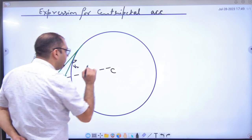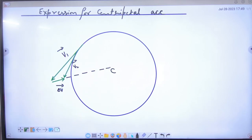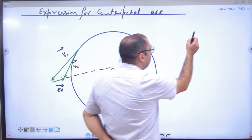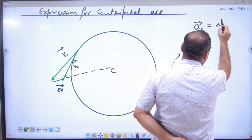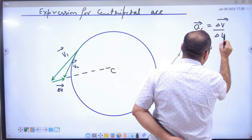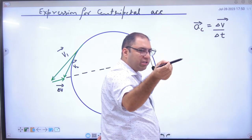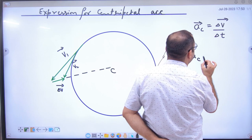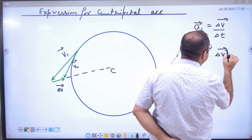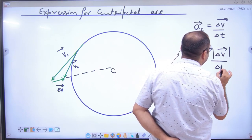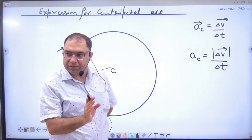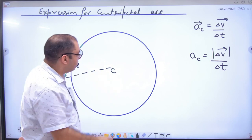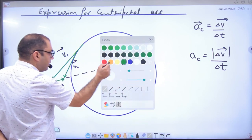Delta V vector points towards the center of the circle — we have done this right here and discussed that centripetal acceleration value is delta V vector divided by time delta t — the velocity change. Centripetal acceleration magnitude is delta V vector mod divided by delta t. This is clear. Centripetal acceleration magnitude — this is important now.